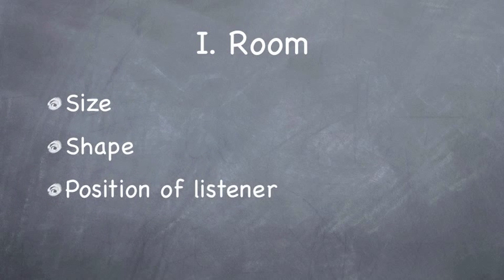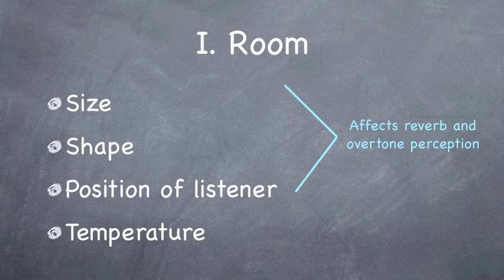So number one, the room. Basically our variables here are the size of the room, the shape, the position of the listener, and the position of the marimba in relation to the listener, and the temperature. Now these first three things affect the reverb and the overtone perception. And the reverb is something that's very obvious, even to people who aren't musicians. If I record me playing something in a practice room and I record me playing something in a huge concert hall and I play them for my grandma, she's going to tell a very noticeable difference between the two.